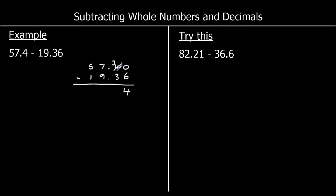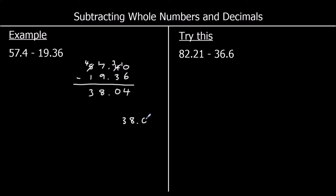In the tenths I've got three take away three, which is nothing. In the ones I've got seven take away nine — I don't want to do that, so I'll take one from the tens, which is worth 10 in the ones. So 17 take away nine is eight. And the tens: four take away one is three. So the answer is 38.04.